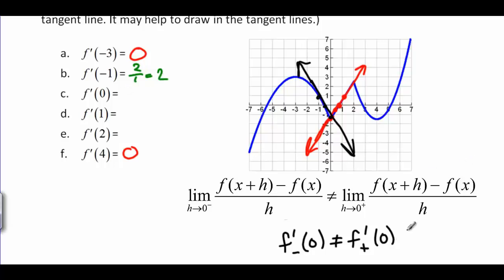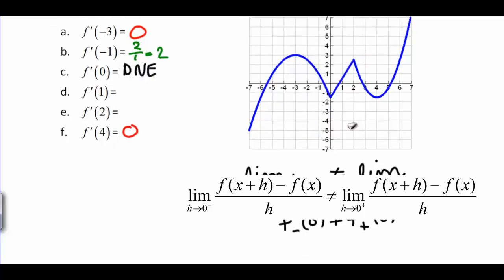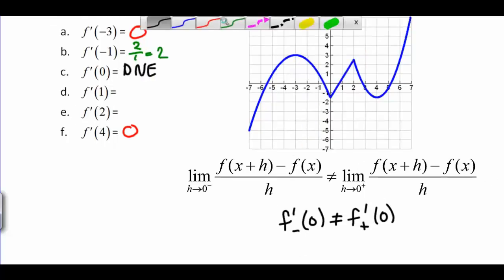Now let's look at f prime of 1. At 1, our function is actually a straight line. And that means that its tangent line is itself. So if we just pick any two points on this line, at 1, it looks like we're at the point 1, 1 half.